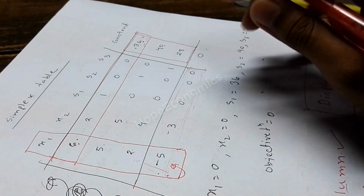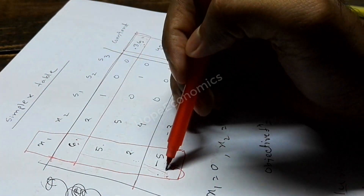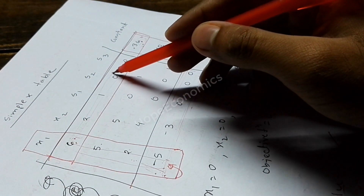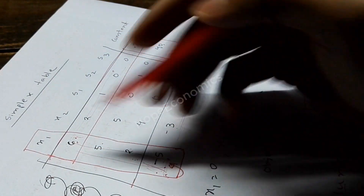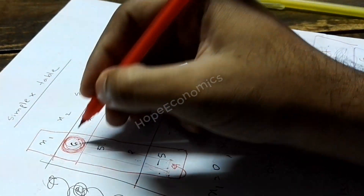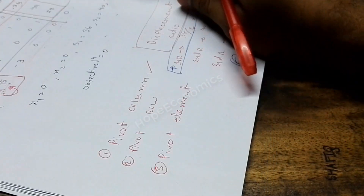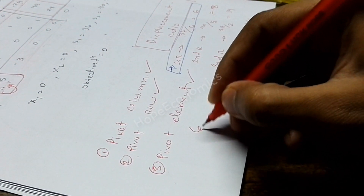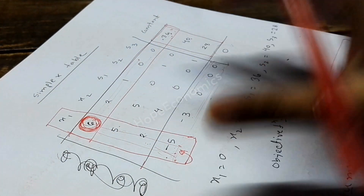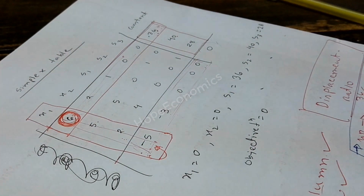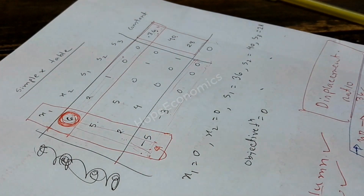The intersection point of the pivot row and pivot column gives us the pivot element. The intersection value here is six, so six is our pivot element. This is how we find the pivot row, pivot column, and pivot element. We will use this basic concept to solve the simplex algorithm method further.